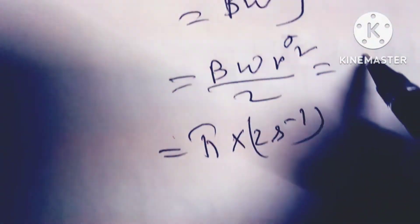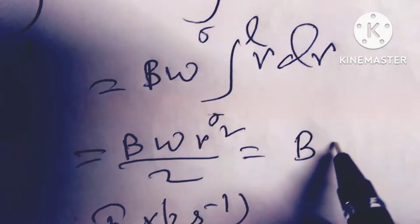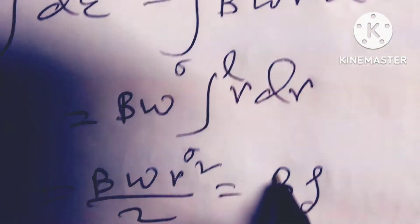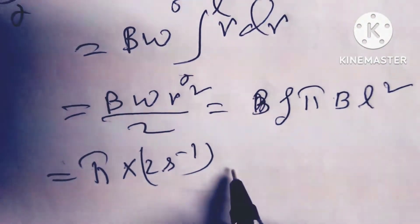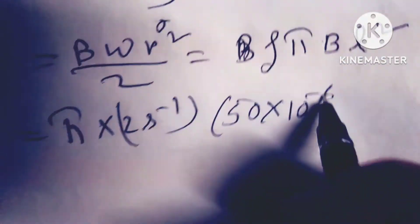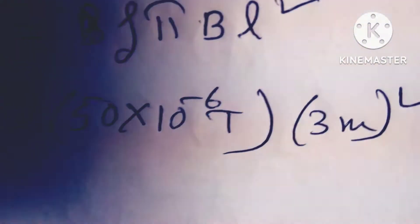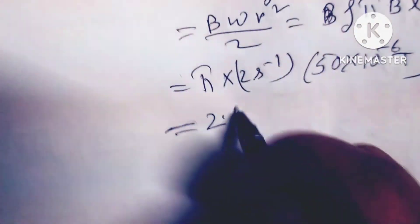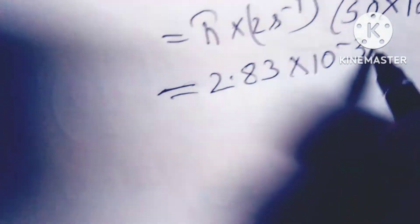Now putting the value, omega is equal to 2 pi F, so it can be written as pi B L squared divided by 2. So it is 50 × 10⁻⁶ Tesla into 3 meters whole squared.